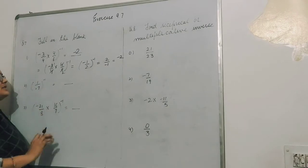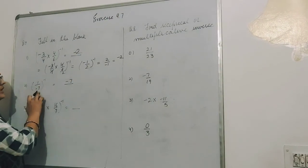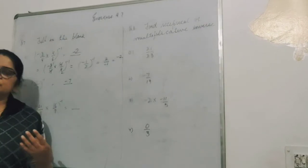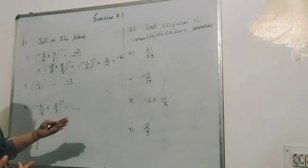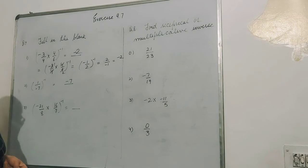Now 1 upon minus 7, its reciprocal: denominator is minus 7, when we take reciprocal denominator goes to numerator. Numerator is 1, so no need to write 1 in denominator.